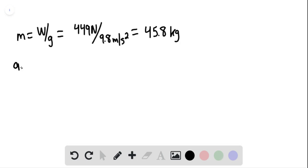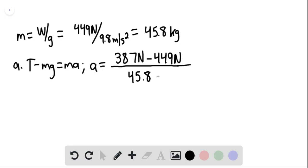For part A, applying Newton's second law, we have T minus MG equaling the mass times the acceleration. The acceleration equals 387 Newtons minus 449 Newtons divided by the mass of 45.8 kilograms, giving us negative 1.4 meters per second squared.